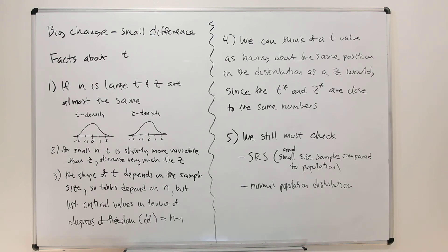Number 4 says we can think of a t-value as having about the same position in the distribution as the z, because the t-star and z-star critical values are almost the same numbers. So if we look at the table and you look at the t-star and the z-star, they don't differ substantially. They differ enough that you might cause yourself to make a slightly different size confidence interval or have a different result of a hypothesis test if you use alpha equals 0.05. One of them might accept and the other one might reject if it's close to the borderline. But pretty much they're the same numbers.